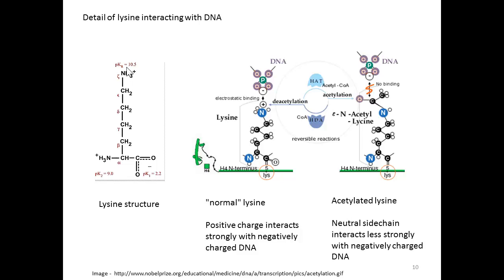On this slide we see a picture of the structure of lysine, with the positively charged amino group at the end of the side chain connected to the alpha carbon. In the deacetylated state, you have a positively charged amino group and a negatively charged phosphate group of the DNA. If the lysine is acetylated — here's the amino group, here's the acetyl group — this neutralizes the positive charge. Now there's a negative charge on the DNA but no positive charge on the protein, and the interaction is much weaker.